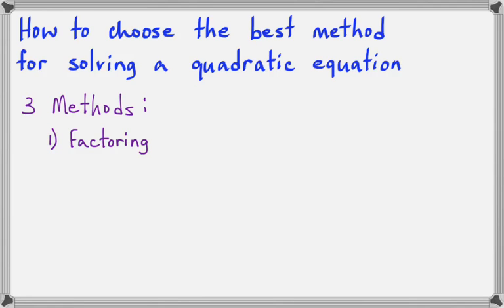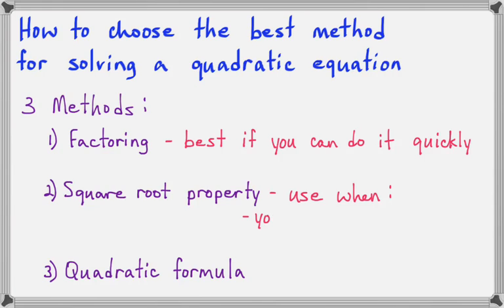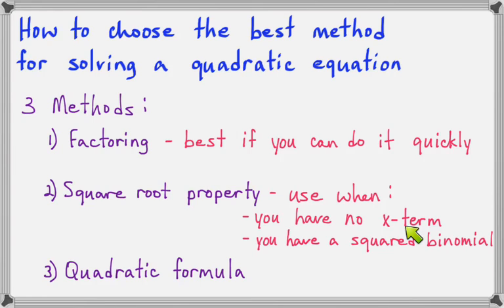So we said factoring, square root property, and formula. Now if you can factor, factoring can be pretty fast, so I would say try that first. But if you don't think you're going to be able to factor quickly, see if you've got a square root property problem. You'll know if you have a square root property if you have no x term, or if you have a squared binomial. Either one of those situations, use the square root property. And if you can't do either one of these, use the formula as a last resort.